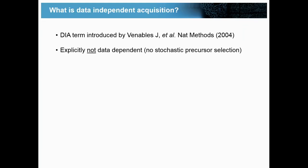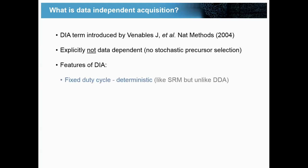So what do we actually mean by data-independent acquisition? This term was introduced in a paper in 2004 from John Yates' group. First, it's explicitly not data-dependent — there's no stochastic precursor selection. Some features of DIA are: one, it has a fixed duty cycle, so the instrument operates on a completely fixed, deterministic duty cycle. This is like SRM but unlike DDA.